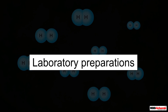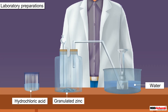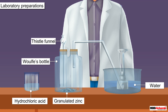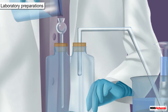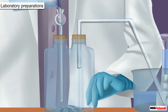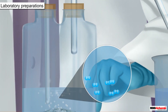In a laboratory, dihydrogen can be prepared by the reaction of zinc with an acid. For this reaction, granulated zinc is taken in the Woolf's bottle, which is fitted with a thistle funnel and a delivery tube. Then dilute hydrochloric acid is added to the Woolf's bottle through the thistle funnel.